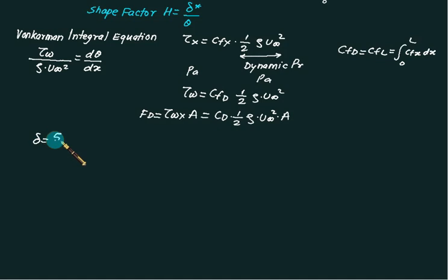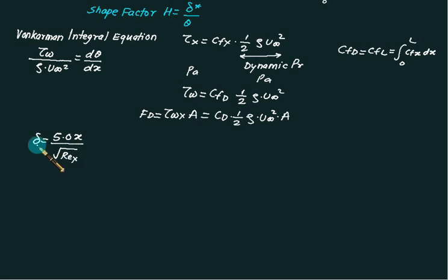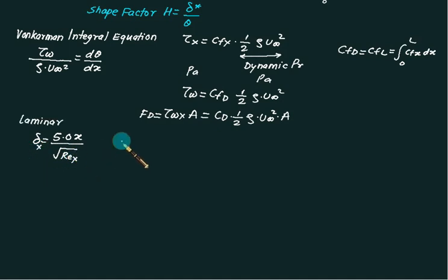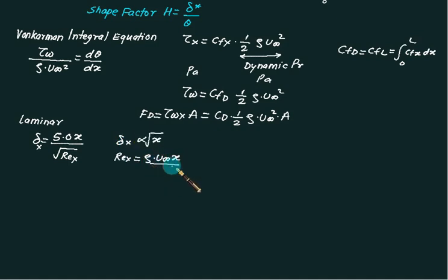For laminar flow, solving for Re_x shows that the boundary layer thickness is proportional to the square root of x. Here Re_x is given as rho u-infinity x divided by mu (dynamic viscosity).